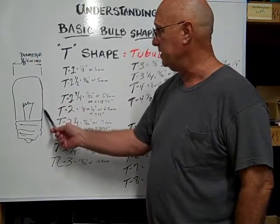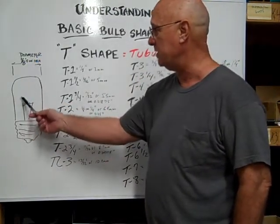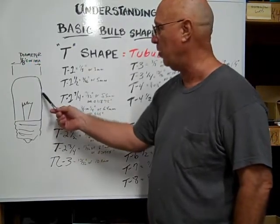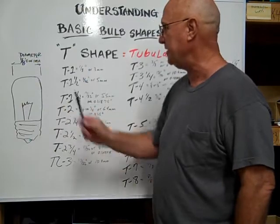That is the dimension across the diameter of the glass envelope, the globe of the bulb. It's measured in eighths of an inch.